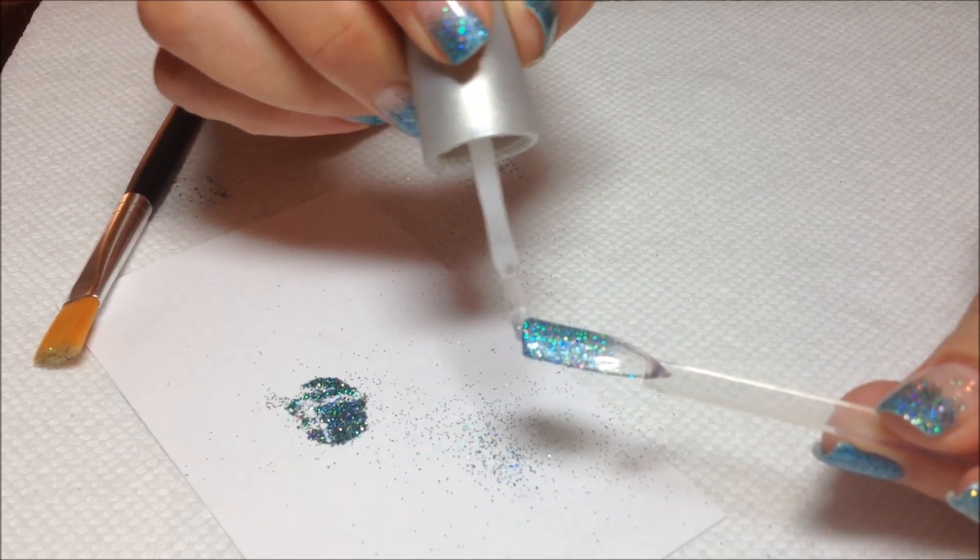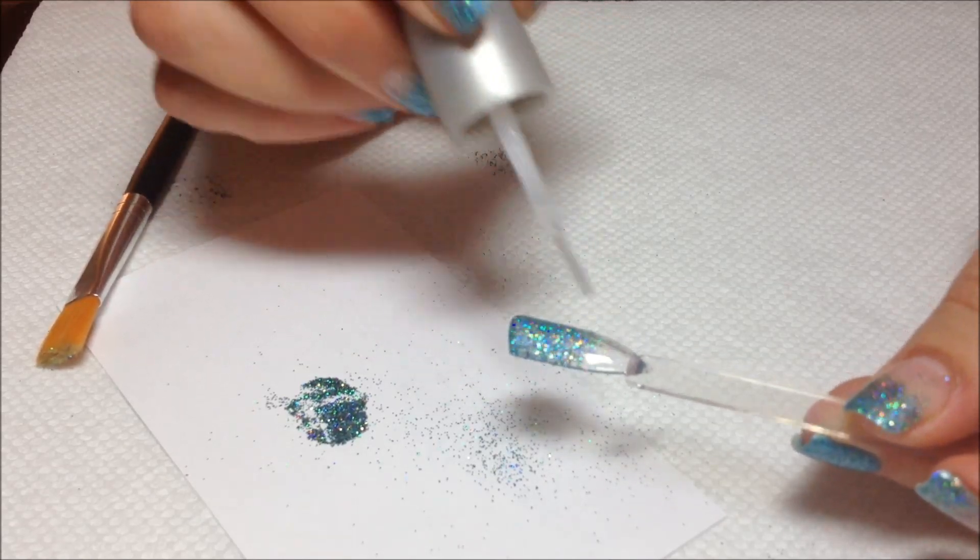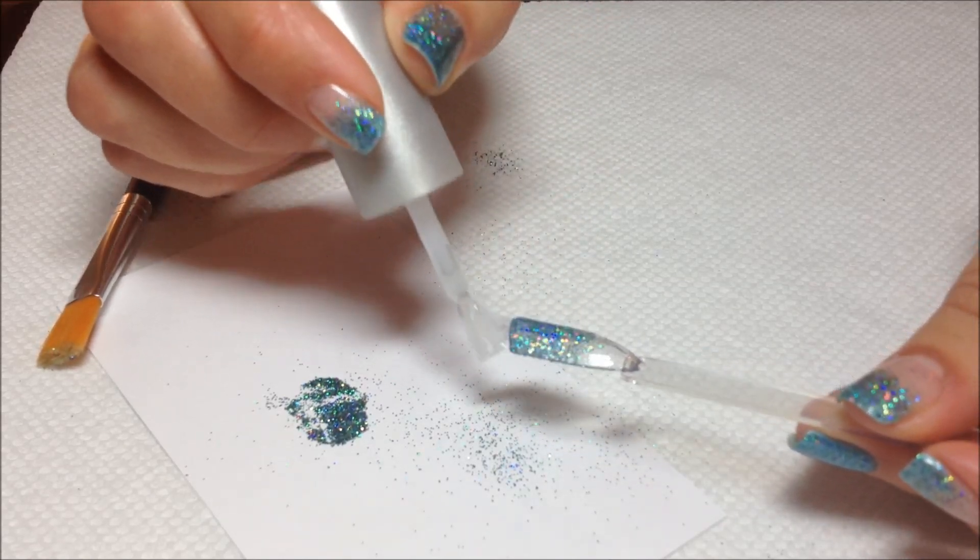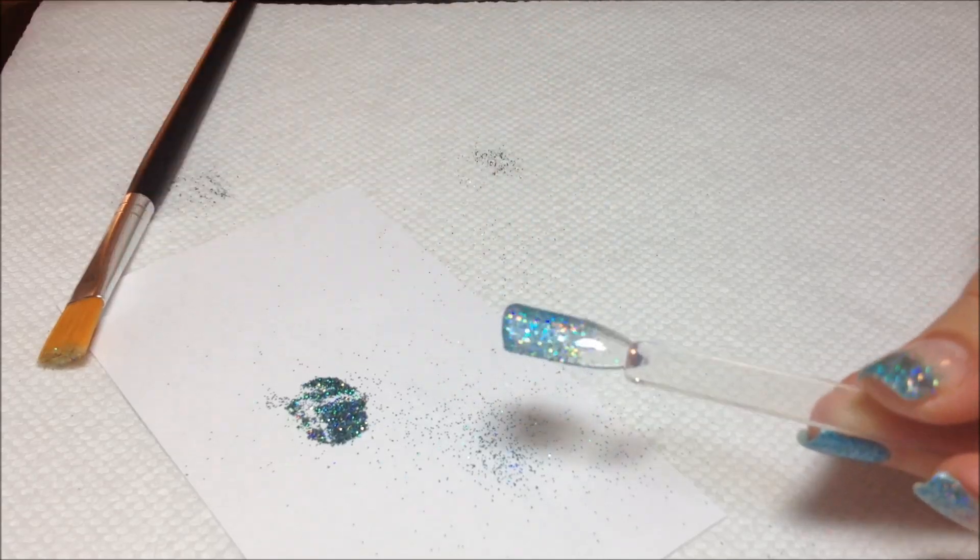And of course cap that loose edge. And if your manicure is not perfectly smooth after this one coat, you can actually apply a second coat of your top coat and you'll have a perfectly glassy finish.